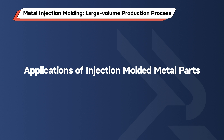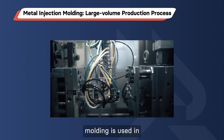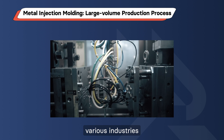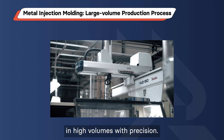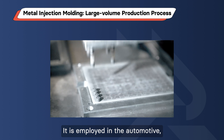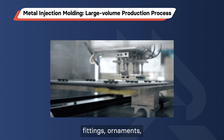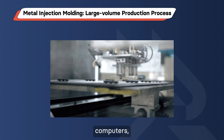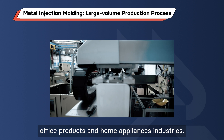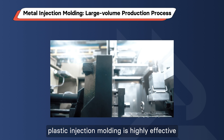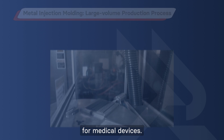Applications of Injection-Molded Metal Parts. Metal injection molding is used in various industries to produce complex components in high volumes with precision. It is employed in the automotive, aerospace, medical equipment, fittings, ornaments, computers, office products, and home appliances industries. Additionally, plastic injection molding is highly effective for medical devices.